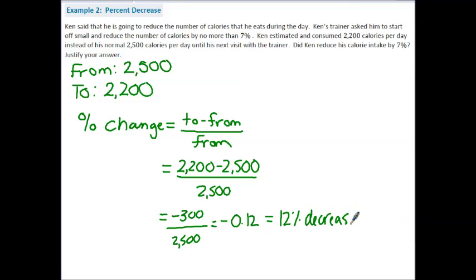Now, notice that the negative here is what implies that it's a decrease. We need to answer our final question. Did Ken reduce his calorie intake by seven percent? We found that he decreased calorie intake by twelve percent. So he did not follow the instructions of his trainer.